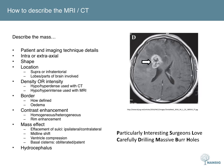There are a number of things that constitute mass effect, including effacement of the sulci — that basically means you cannot clearly see the sulci, which are the depressions between the gyri. This can be ipsilateral or contralateral. This lesion does have some ipsilateral sulcal effacement but no contralateral sulcal effacement. You can comment on the degree of midline shift by measuring it, and you should also comment on ventricular compression — this lesion is compressing the right frontal horn.